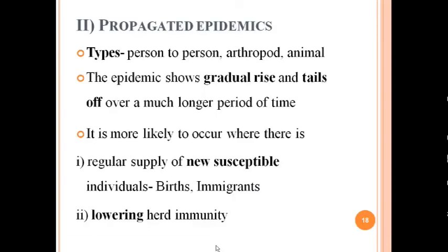A propagated epidemic can be person-to-person, through arthropod, or through an animal reservoir. The epidemic shows a gradual rise and tails off over a much longer period of time. It is more likely to occur when there is a regular supply of new susceptible individuals, such as through births and immigration. The more movement of the population, the more propagated the epidemic will be. The COVID-19 pandemic, because of gradual human mobility, has been propagated continuously.